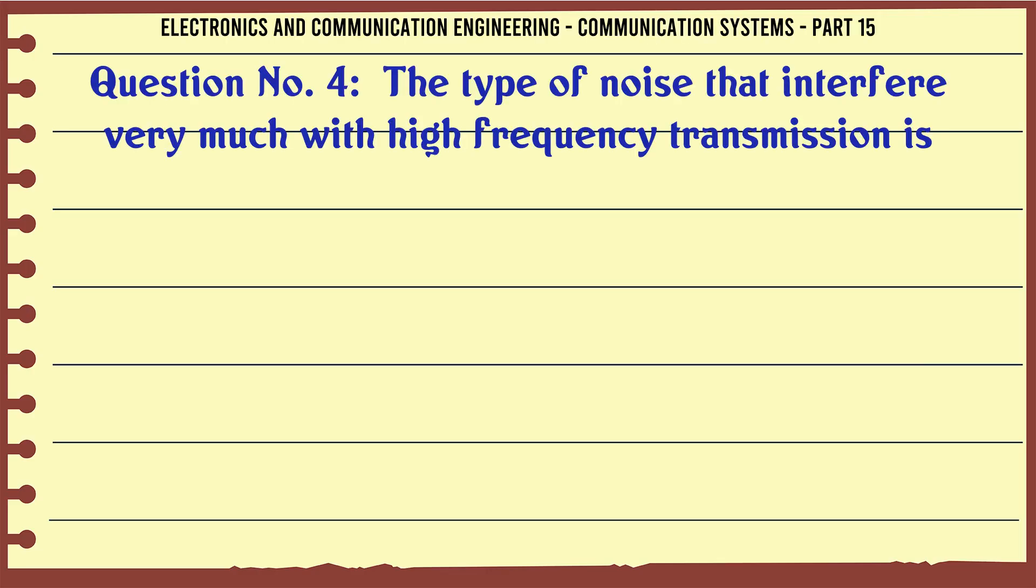The type of noise that interferes very much with high-frequency transmission is: a white, b transit time, c flicker, d short. The correct answer is transit time.